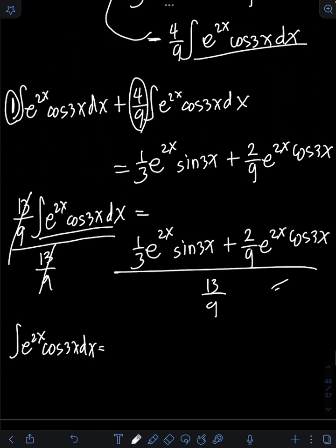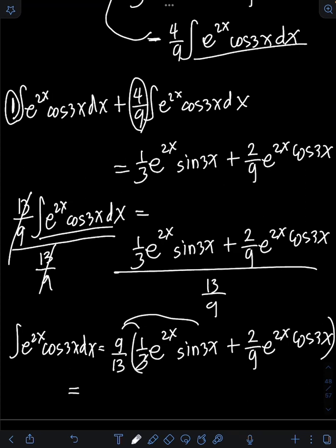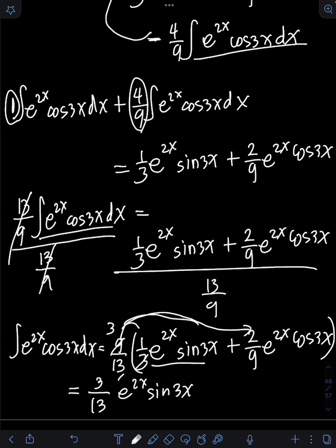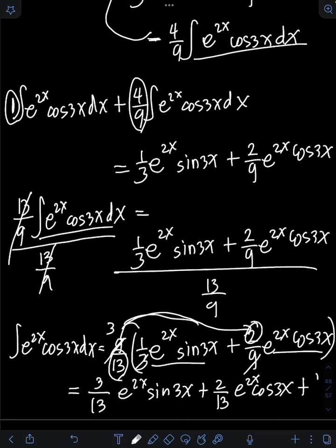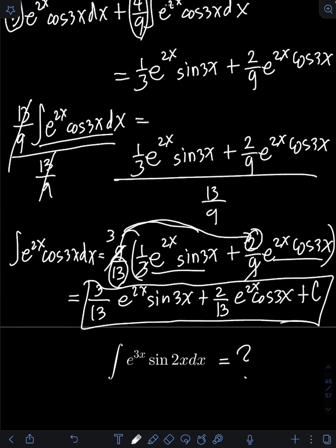We simplify by dividing both sides by 13 over 9, which is the same as multiplying by 9 over 13. Distributing 9 over 13 to every term: 9 over 13 times one-third — the 3 cancels with 9 to give 3 — so we get 3 over 13 times e raised to 2x sine 3x. For the second term, 9 over 13 times two-ninths — the 9 cancels — giving 2 over 13 times e raised to 2x cosine 3x. Don't forget to add plus c at the end. Therefore, this is the final answer. Now it's your turn — try to evaluate this integral and comment your answers.